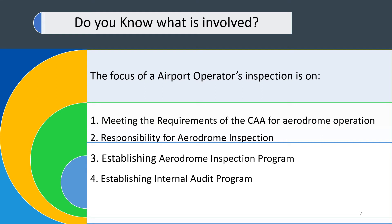This inspection program is vital for safe airport operations and it is performed at different levels. Therefore, the airport must establish an aerodrome inspection program and an internal audit program — that is, a continuous inspection program and an internal audit that is performed periodically to verify the observations made during the inspections and provide corrections as required.